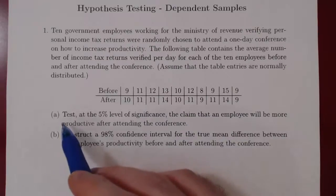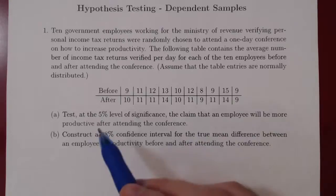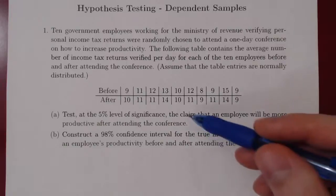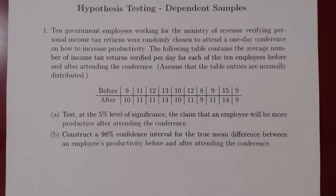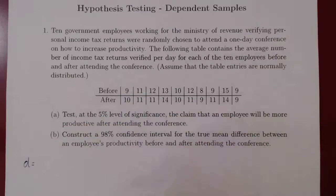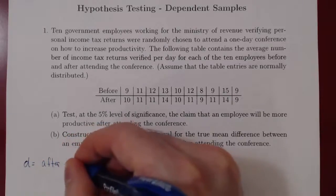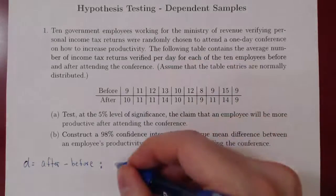Let's look at part A. We want to test at the 5% level of significance the claim that an employee will be more productive after attending the conference. Before we try to test this hypothesis, we know we need two quantities: the sample mean difference and the sample standard deviation of our differences. So let's go with the difference of after minus before. The first difference will be 10 minus 9, which is plus 1.